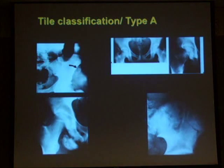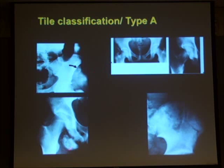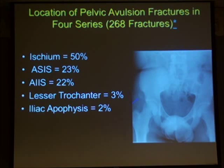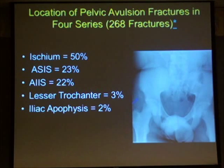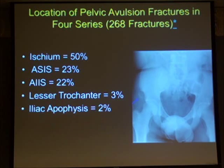Here are examples of Type A stable injuries: an avulsion of the anterior superior iliac spine, an avulsion of the anterior inferior iliac spine, and an avulsion of the ischial tuberosity. When you put all these together, the ischium is probably the largest site for avulsion-type fractures, with ASIS and AIIS almost equally divided between the others.